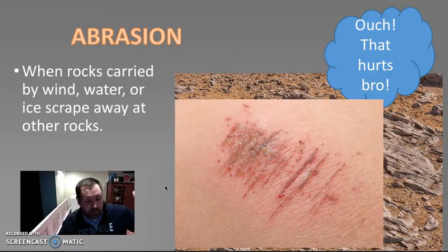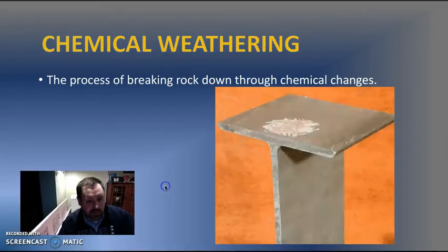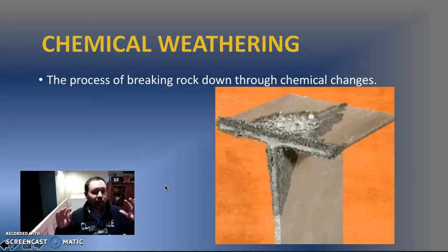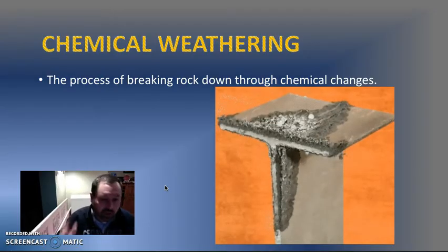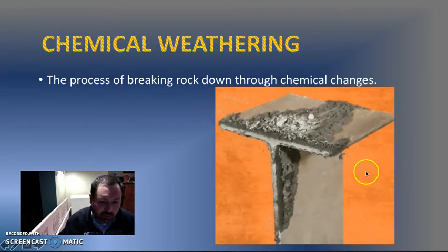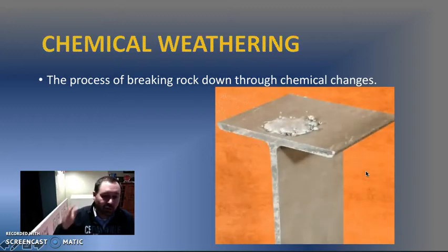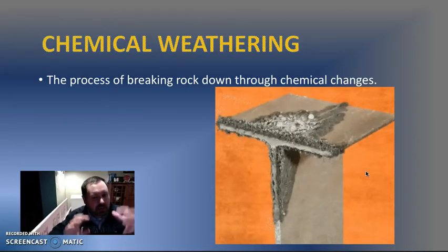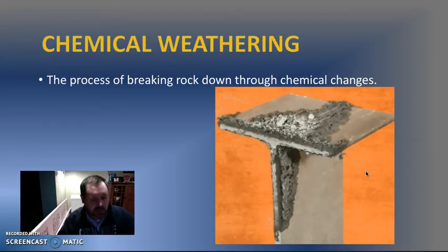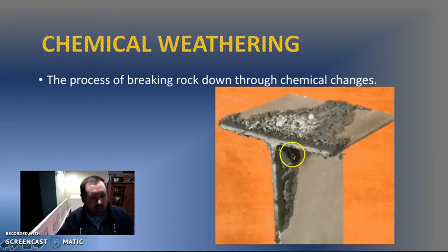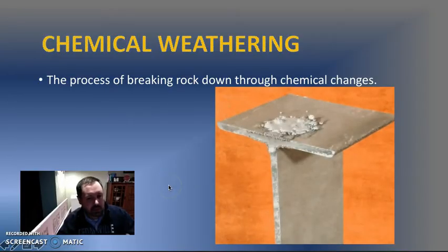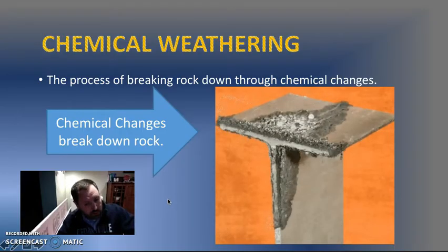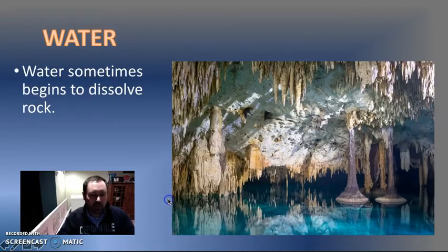Now that we've covered mechanical weathering, it's time for us to move on to chemical weathering. Chemical weathering is the process of breaking down rock through chemical changes. If you look at this gif right here, you can see a chemical change happening — two things are chemically combining, making a new substance. For chemical weathering, it's got to be chemical changes that break down rock.